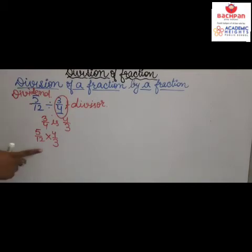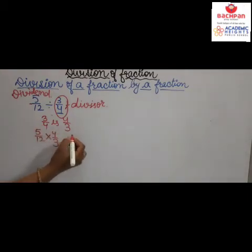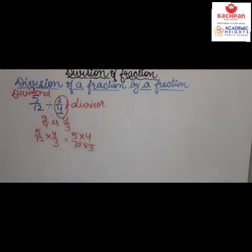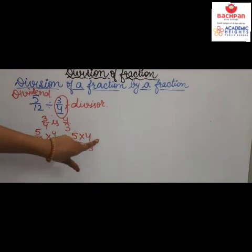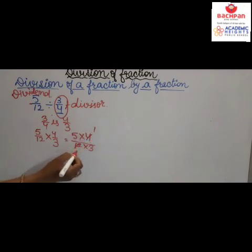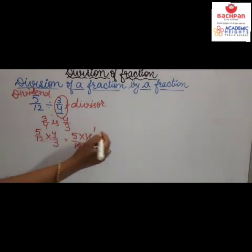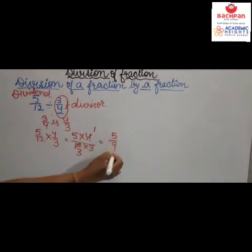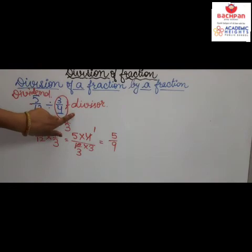Multiply the dividend by the reciprocal of the divisor: 5 upon 12 multiplied by 4 upon 3. The common factor of 12 and 4 is 4, so 4 ones are 4 and 4 threes are 12. Multiplying gives 5 ones are 5 and 3 threes are 9. So 5 upon 12 divided by 3 upon 4 equals 5 upon 9.